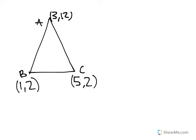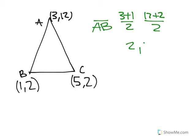Here we're going to find the mid-point between A and B. So you're going to do 3 plus 1 over 2, and 12 plus 2 over 2. And that gets you the point 2 comma 7. So let's just draw that in. That's about right there.